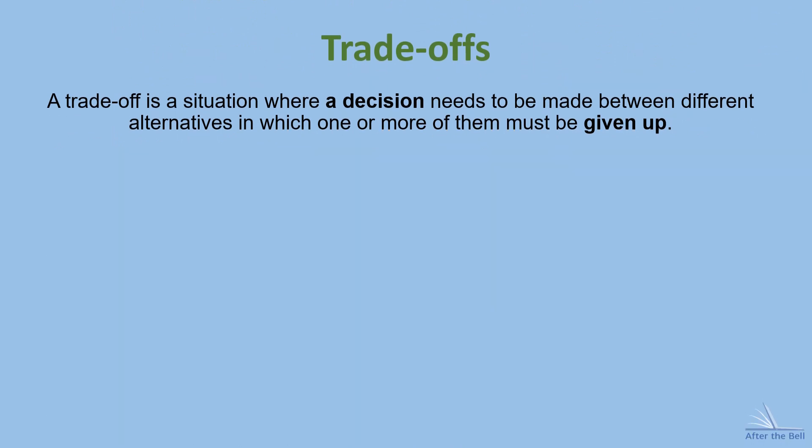As economics is all about scarcity and choices, there'll be situations where a decision needs to be made between varying alternatives and one or more of them must be given up. We call this a trade-off and these trade-offs happen all the time and are faced by each of the main economic agents.